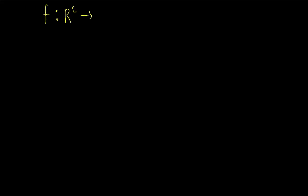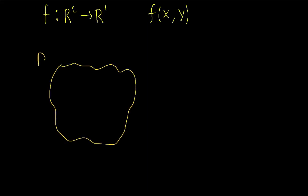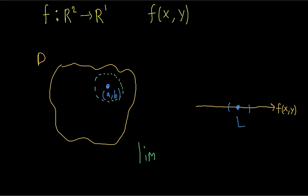Now let's look at how this carries over to a multivariable function. If we have some function from R squared to R1 — a typical function which takes in an x and a y and outputs a z value — we have the same idea, except that our domain is now two-dimensional. The input, instead of approaching a single x value, is going to be approaching a point on this domain. If we can make the value of the function as close as we want to this number l by restricting the input values to some interval around this point (a, b), then we say that the limit as x, y approaches a, b of the function is equal to l.